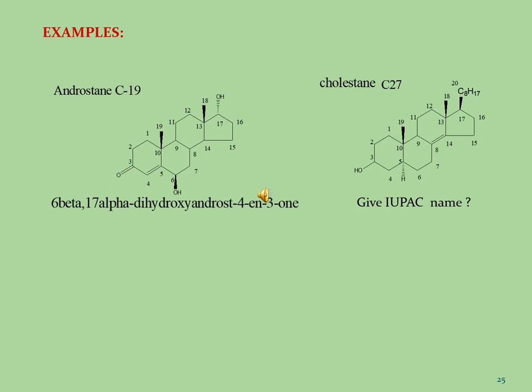In the second example, the total number of carbon atoms is 27 and the name of this molecule is cholestane. Students, now you will give the name of this molecule by using the IUPAC rules — this is your assignment.